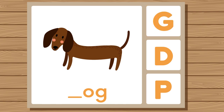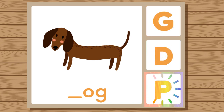Does dog start with G, D, or P? Dog. Dog starts with D.